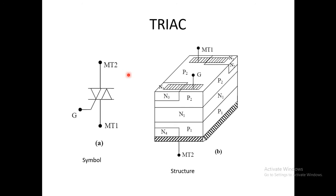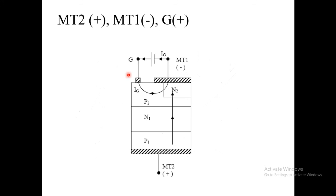Now, we will see case 1 in which TRIAC is more sensitive. In case 1, we are having MT2 positive, MT1 negative, and gate positive. When we apply MT2 positive, junction P1N1 gets forward bias. When MT1 is negative, junction N2P2 will get forward bias. And only junction N1P2 will get reverse bias.